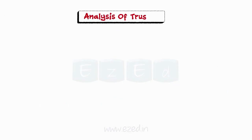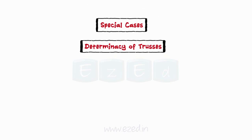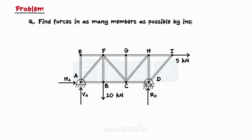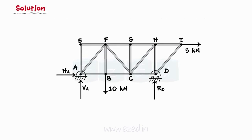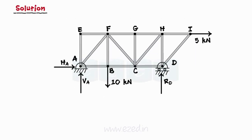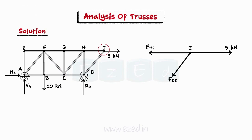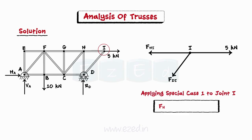The following problems will be helpful to understand the concept behind analysis of a truss using the special cases explained above, and also to determine whether the truss is perfect or imperfect. Consider the truss shown. Find forces in as many members as possible by inspection. We will use the special cases to determine as many member forces as possible. Let us now consider joint I. It consists of only two members and an external force which is collinear to one of the members. Hence, we can apply case 1 to this joint. Thus, we identify force in member HI as 5 kN and tensile in nature. Also, force in member DI is equal to zero.